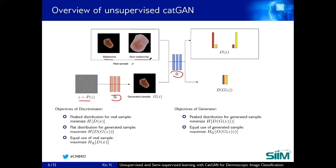For the training, we'd like D to be certain about the classification of the real sample, which means it should produce higher values for either one of the two classes. In information theory, to make a peaked distribution like this amounts to minimizing the entropy of the predicted label distribution. But if the input to D is a generative sample, we would like D to produce even numbers for the two classes — a flat distribution — which amounts to maximizing the entropy of the predicted label distribution. The last objective of D is to make equal use of real samples by maximizing the entropy of the marginalized label distribution of the real sample. This objective is very important, because otherwise D can just cheat us by classifying all the real samples to the same class.